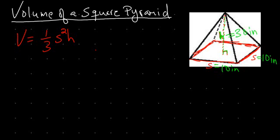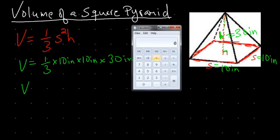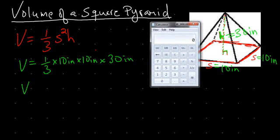What is the volume? V equals one-third times s squared, which is side times side: one-third times 10 inches times 10 inches times the height of 30 inches. Using order of operations, we can multiply in any order, so let's do 10 times 10 times 30, which gives us 3,000.